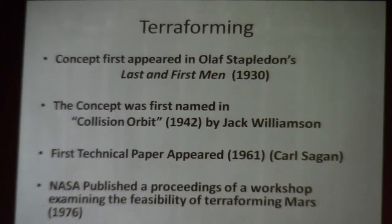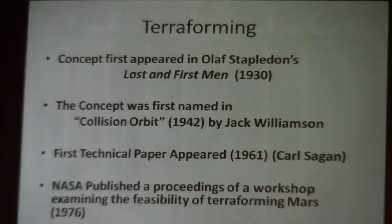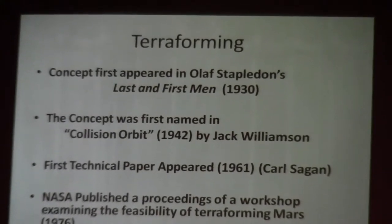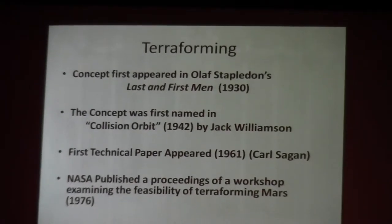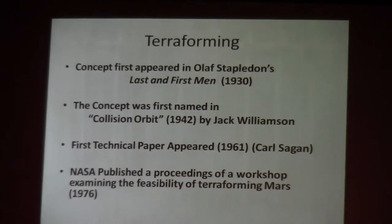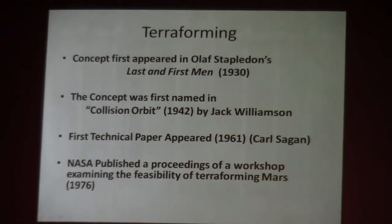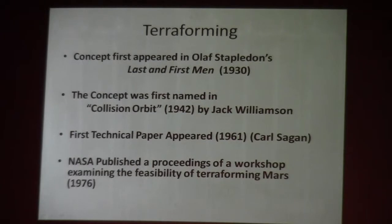The original concept appeared in 1930. Jack Williamson came up with the actual term terraforming in 1942. Carl Sagan actually came up with the first terraforming paper. And then the first workshop was held in 1976. So it's a fairly recent discipline, looking at things we can do probably far out in the future — but just because it's far out doesn't mean it's not important.